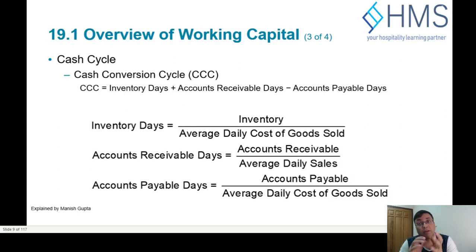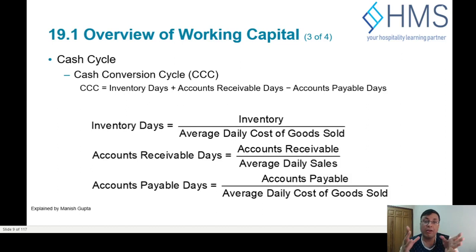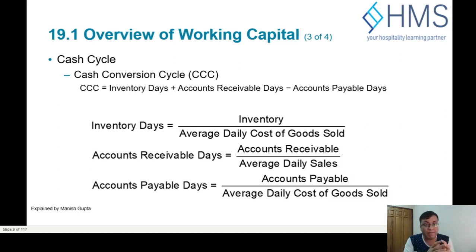For accounts receivable days, it should technically use credit sales only, since you are collecting on credit sales. However, because the ratio of credit to cash sales is not always constant, we use total average daily sales to maintain consistency. This also accounts for any increasing or decreasing component of credit sales relative to total sales.